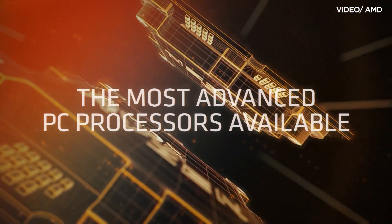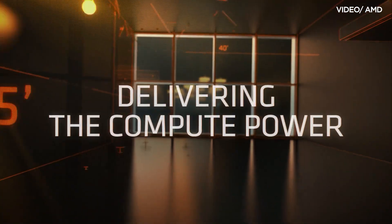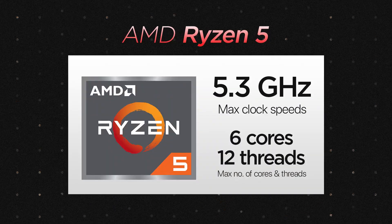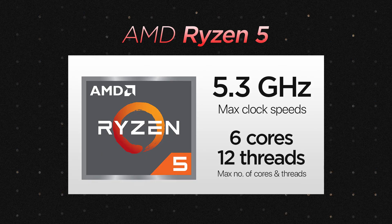Ryzen 5 desktop processors include both the Ryzen 5 7600 and 7600X. These processors typically have 6 cores and 12 threads and offer strong single-threaded and multi-threaded performance for most users.